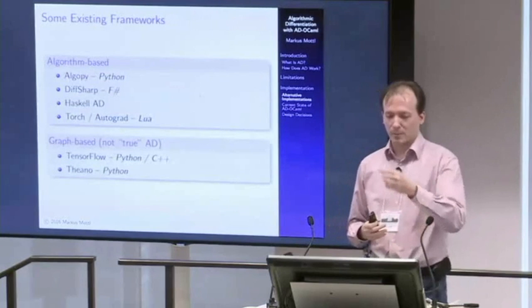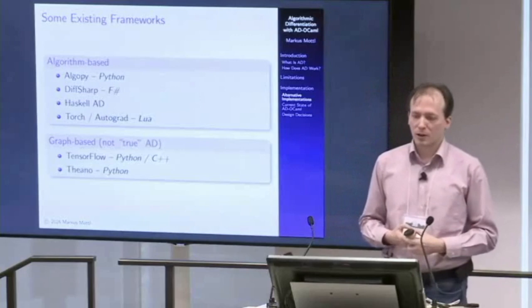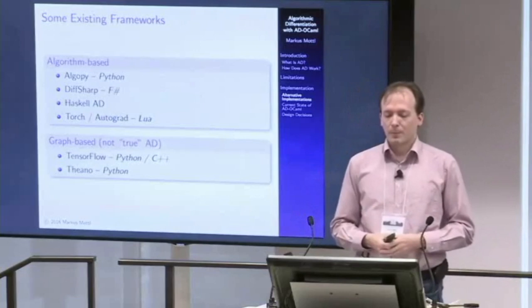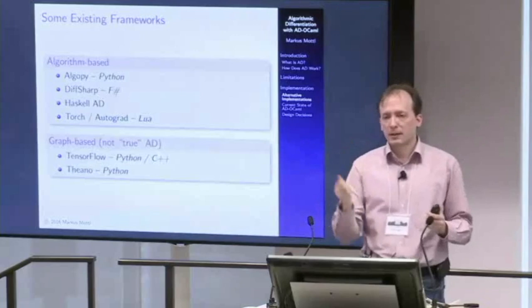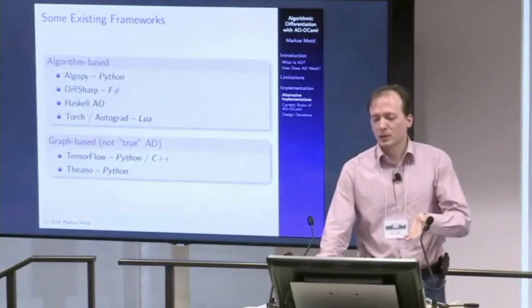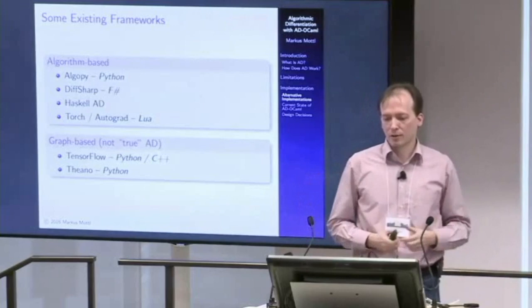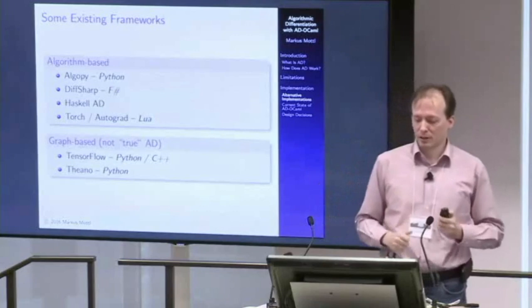Now let's get to the implementation of AD-OCaml. First, a quick description of other frameworks. Many of you have heard of TensorFlow, which Google released and many use for deep learning. I classify frameworks as algorithm-based or graph-based. Graph-based ones require you to explicitly create nodes in a computational graph. Algorithm-based ones infer the computational graph just by watching program execution. Algorithm-based approaches are more general — especially when well implemented — because you can nest applications of derivative operators.